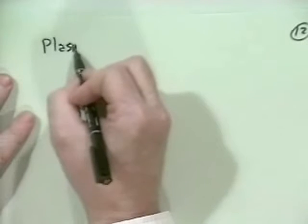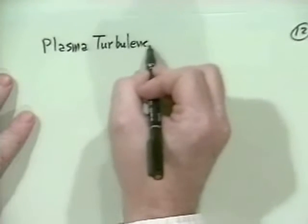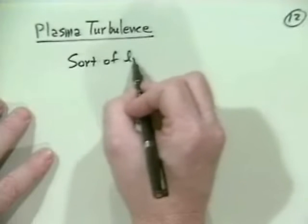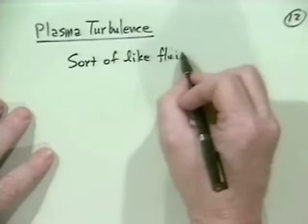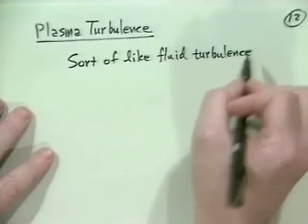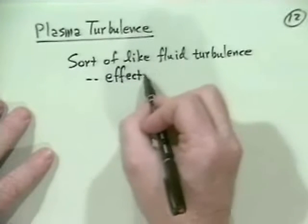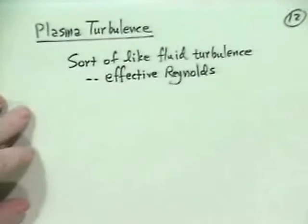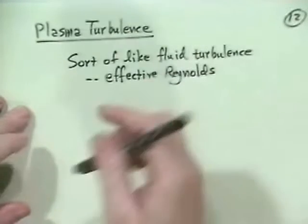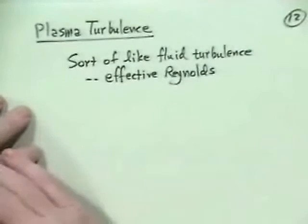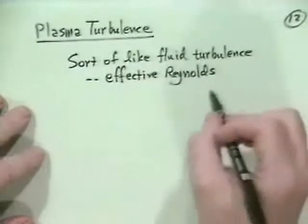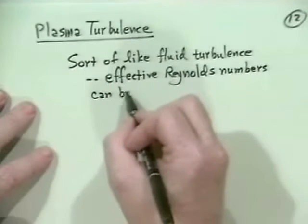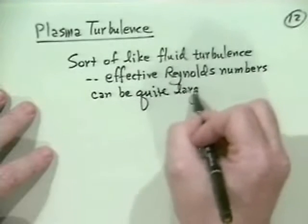Now, what happens in a plasma? Is it the same sort of thing? Well, it turns out we certainly have large Reynolds number situations. You may remember we've had weak dissipation. Collisions were kind of weak. Landau damping is kind of weak, and so forth and so on. So, in general, it's sort of the same type of thing. So let's talk a little bit about plasma turbulence. So let's say sort of like fluid turbulence. And let's say the effective, it's a little bit tricky, but anyway, Reynolds numbers.